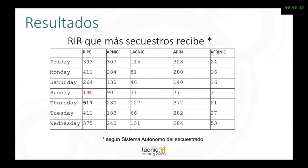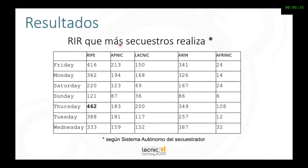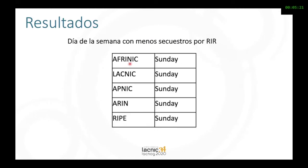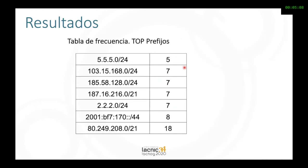Here we have the RIR that receives more hijacking. We can see RIPE NCC is the RIR that receives the most hijacking, divided by days of the week. We also have the RIR that performs more hijacks. On Thursday, the RIPE NCC region is the one that hijacks more. And it's not surprising to see that Sunday is the day with the least hijackings in all regions — Sunday is the day where hijackers rest.